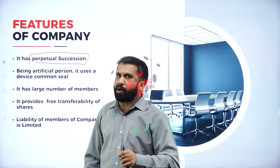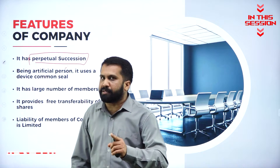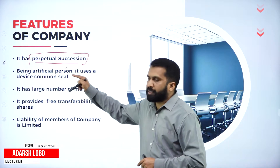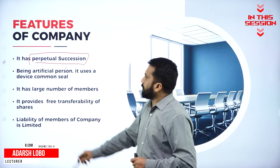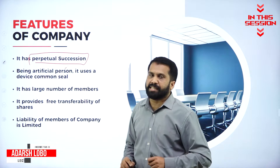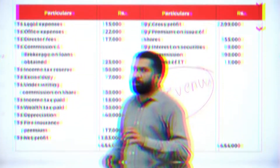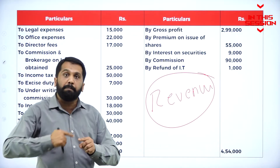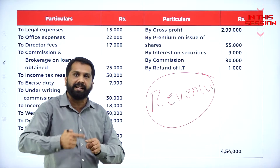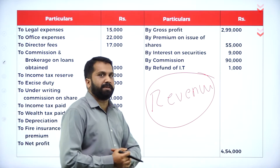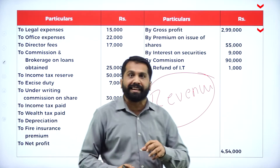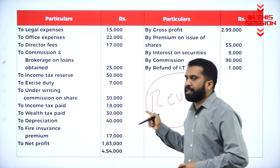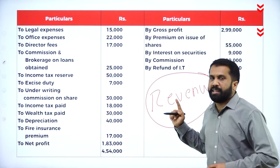The company is not dependent on one person. Even though that person dies, the company will run. That is called perpetual succession. Revenue is nothing but repeatedly happening, recurring in nature. What are the expenses which are recurring in nature? We call it as revenue expenditure and revenue income.